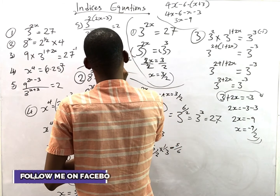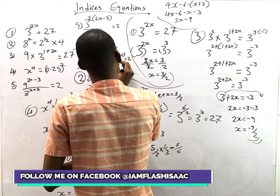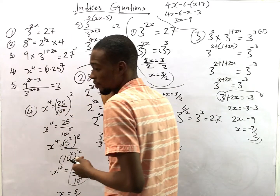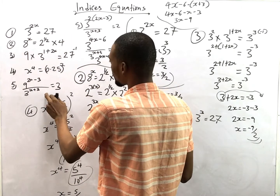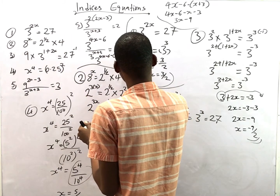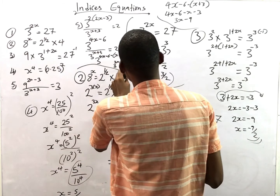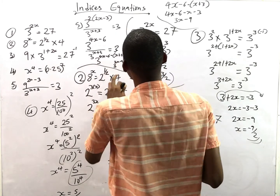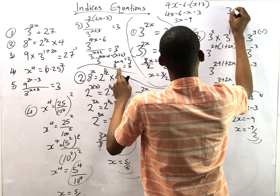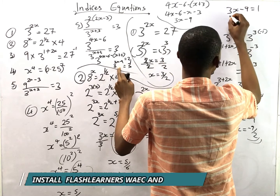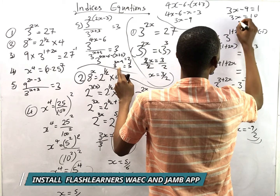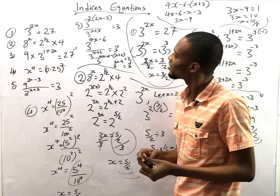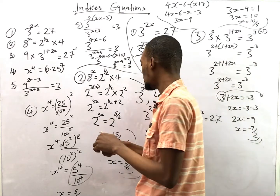So 3^(3s-9) = 2. Now 2 can be written as... actually 2 = 3^1? Correcting: equating, the right side equals 3^1, so the bases are the same and 3s - 9 = 1. Therefore 3s = 10, giving s = 10/3. That is your answer.